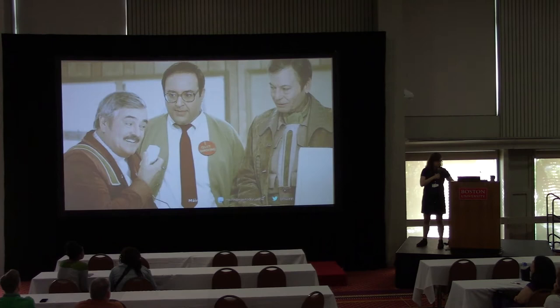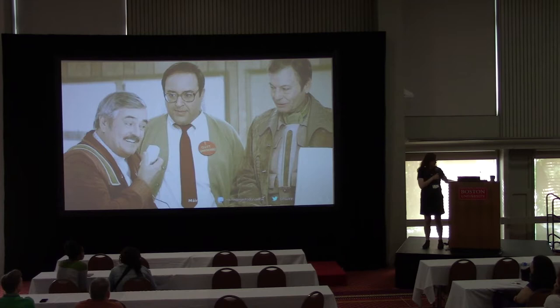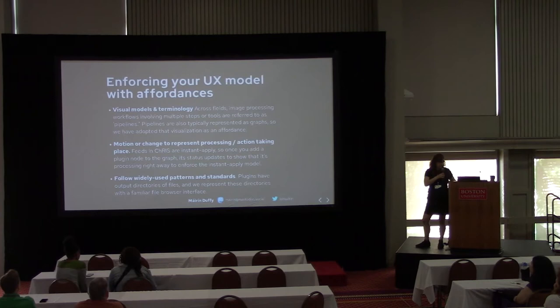You want to enforce your model by having objects in the interface with properties that make it clear what is meant to be done with them. There's a scene in Star Trek IV where Scotty is in the 1980s and thinks the mouse is a microphone — you want to avoid situations like that. You want someone to know right away, 'I pick this up and I move it with my hand.' Affordances are basically properties of objects in your system that make it obvious what's meant to be done with them.